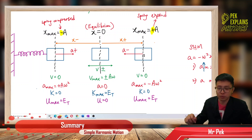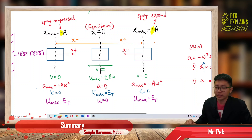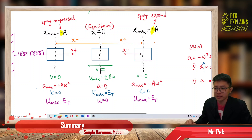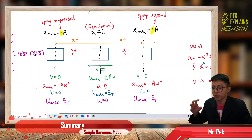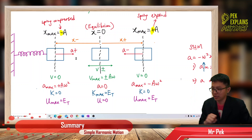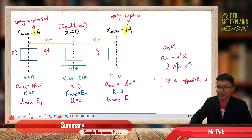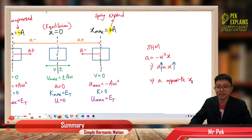When displacement is positive, you extend the spring, so acceleration is negative — the spring wants to pull back. When you compress the spring, displacement is negative and the spring wants to push back out, so acceleration is positive to the right. That's why acceleration is always opposite to x.